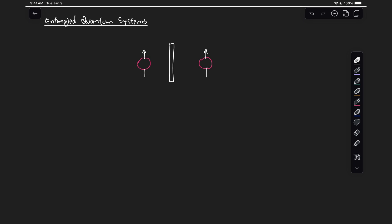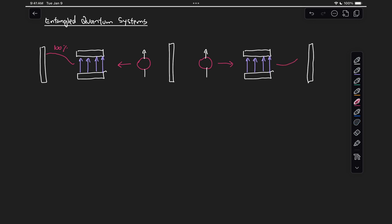If we wanted to measure the spin of this electron, we could put our Stern-Gerlach device here on the left with this magnetic field pointing in the plus z direction. We know that if we send this particle through this apparatus, we will see it deflecting in the plus z direction with 100% probability. And very similarly, if we were to do that with the particle on the right, we would expect to see the exact same result. In our qubit representation, the particle on the left is in state zero, and same for the one on the right, so the total system state will be zero tensor zero.